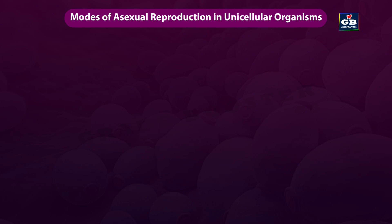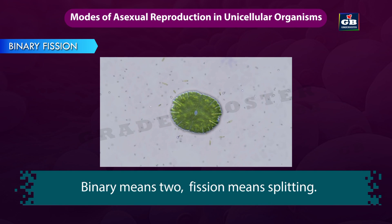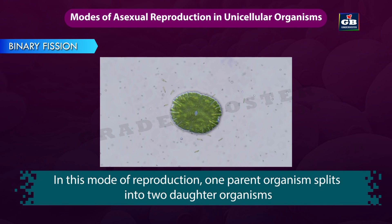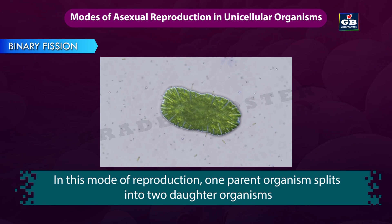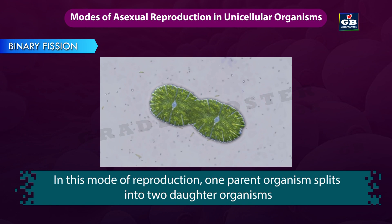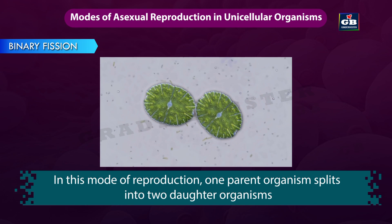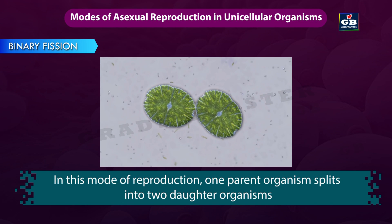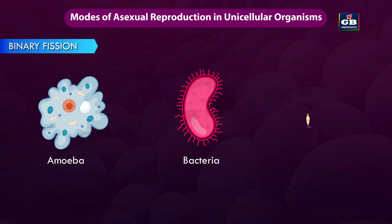Let us see the different modes of asexual reproduction in unicellular organisms. Binary fission — binary means two, fission means splitting. In this mode of reproduction, one parent organism splits into two daughter organisms. This type of asexual reproduction is observed in single-celled organisms like amoeba, bacteria, and euglena.